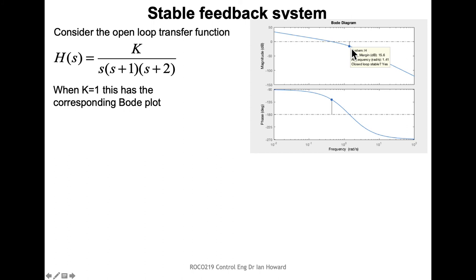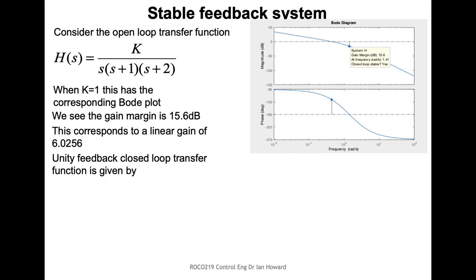At the point of 180-degree phase shift, what we care about is what the gain is at that point. In this particular example with K set to 1, that value is less than 0 dB, so it's stable. The gain margin tells us how much more gain we need to add until that goes to 0 dB — unity. Adding that much gain means the system has a magnitude of 1; any more and the system goes unstable due to positive feedback. The gain margin here is 15.6 dB, corresponding to a linear gain of just over 6.